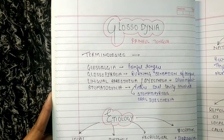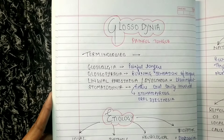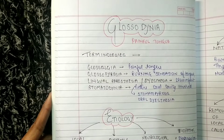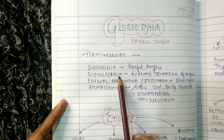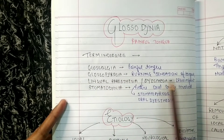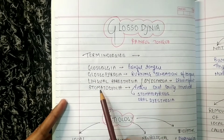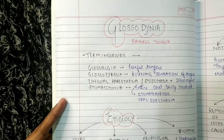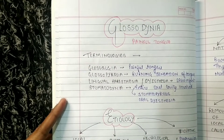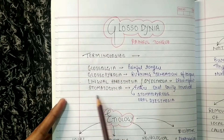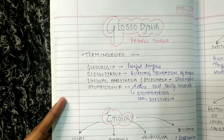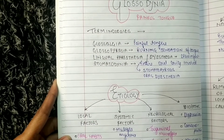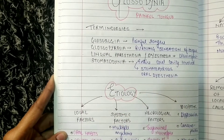There are some terminologies to remember. Glossodynia and glossalgia both refer to a painful tongue. Glossopyrosia — where pyrosia means burning sensation — refers to burning of the tongue. Lingual paresthesia or dysthesia means discomfort in the tongue.